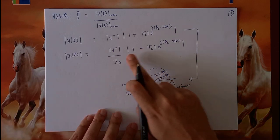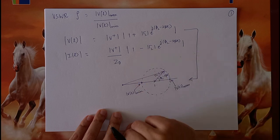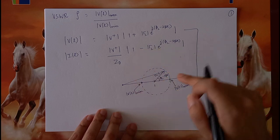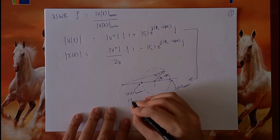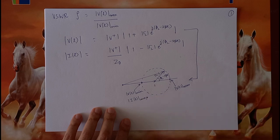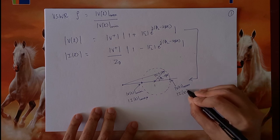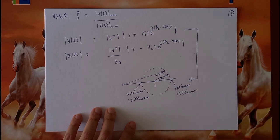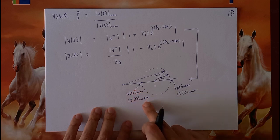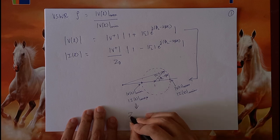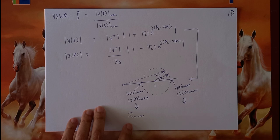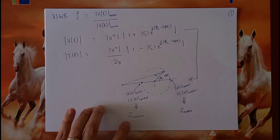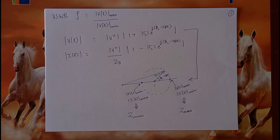Because of the minus sign in the current expression, the point where we have the voltage minimum is the same point where we have the current maxima, and vice versa. Therefore, if voltage is minimum and current is maximum, the impedance is also at its minimum at that point. Likewise, at the point of voltage maximum and current minimum, we have the impedance maxima.